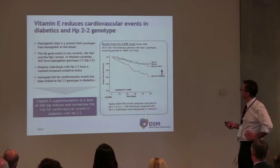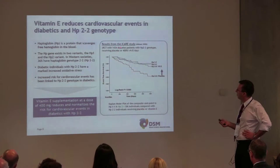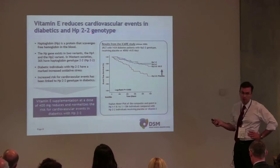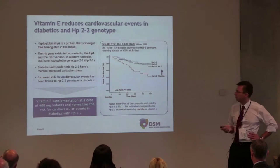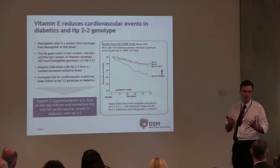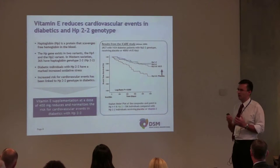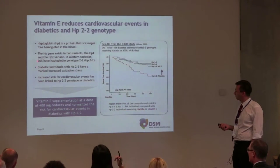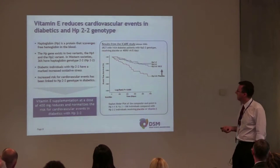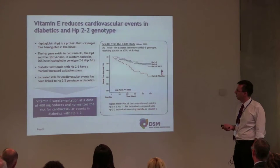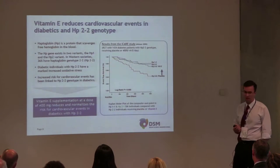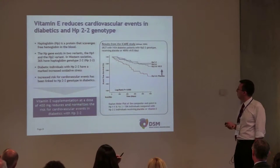The first study conducted in this regard was the so-called ICARE study with almost 1,500 diabetic patients with a so-called haptoglobin 2-2 genotype. Haptoglobin is a protein which catches free hemoglobin in the blood. Free hemoglobin is known to be higher in diabetic patients and is a highly reactive molecule. The haptoglobin gene, the HP gene, has two variants — HP1 and HP2. Diabetic individuals with the HP2-2 genotype have been shown to have markedly increased oxidative stress and increased cardiovascular risk.